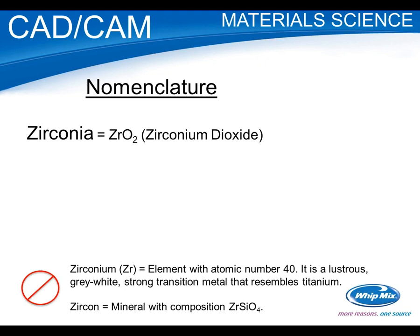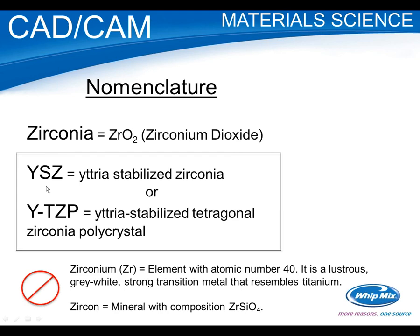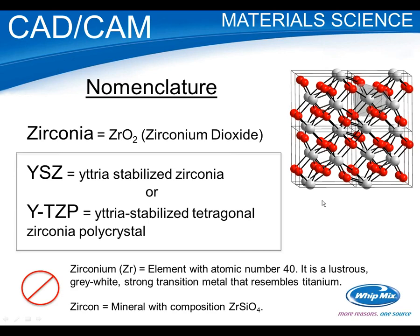You may also hear 'zircon' — but zircon is a different chemical, zirconium silicate. And 'zirconium oxide' is redundant — that's like saying zirconium oxide oxide. So: zirconia. You'll also see it called YSZ — Yttria Stabilized Zirconia — or YTZP, which is Yttria Stabilized Tetragonal Zirconia Polycrystal. The magic is really based on this Yttria Stabilized Tetragonal Zirconia Polycrystal formation.